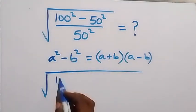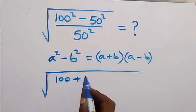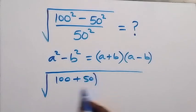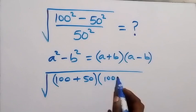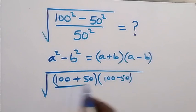So this becomes 100 plus 50, multiplied by 100 minus 50, over 50².